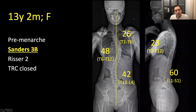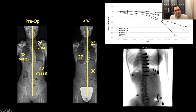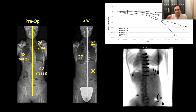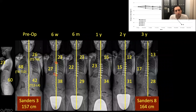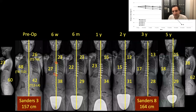Sanders 3B case: triradiate now closed, but still expected growth. We corrected down to 27. However, for this patient the lumbar curve didn't respond spontaneously to the correction above, so we braced her for a couple of months postoperatively until the modulation started. At three years she was already Sanders 8 mature, and at five years it all looks stable.